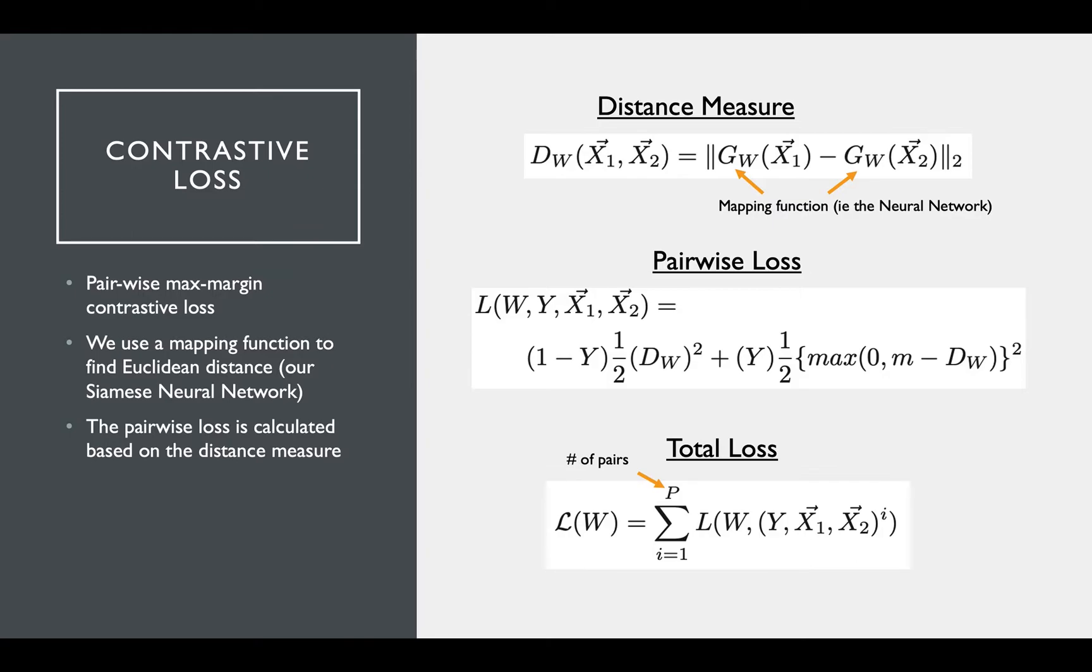Since Y is either 1 or 0, the 1 minus Y and Y act as indicator variables. If Y is 0, meaning the inputs should be similar, the loss is simply half times the Euclidean distance between the pairs squared. You can see this plays nicely with the chain rule when we're looking at the gradient and it's a very natural result.